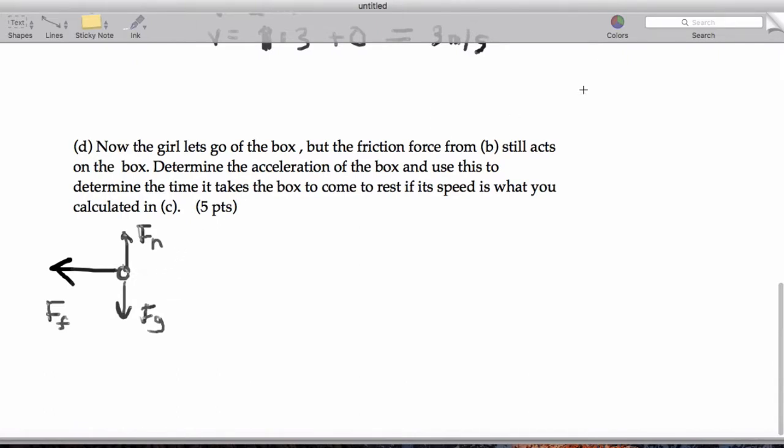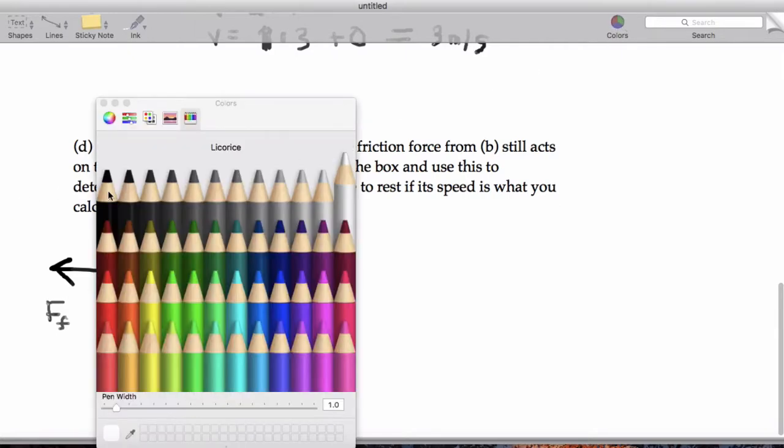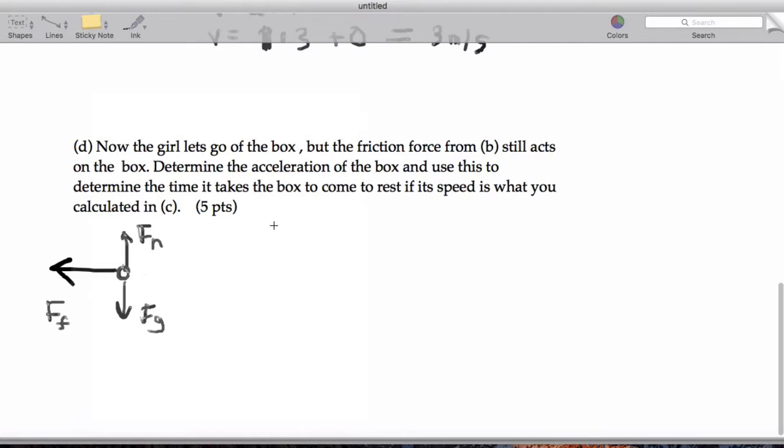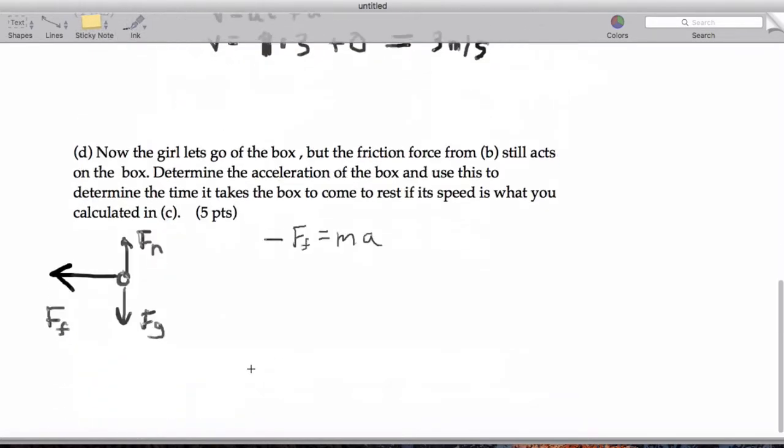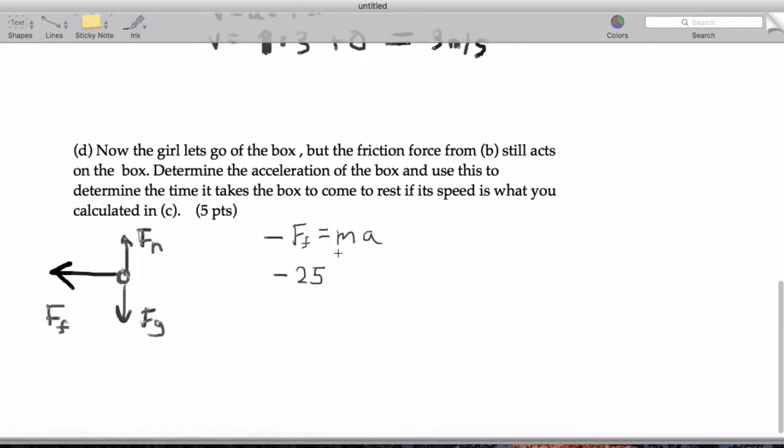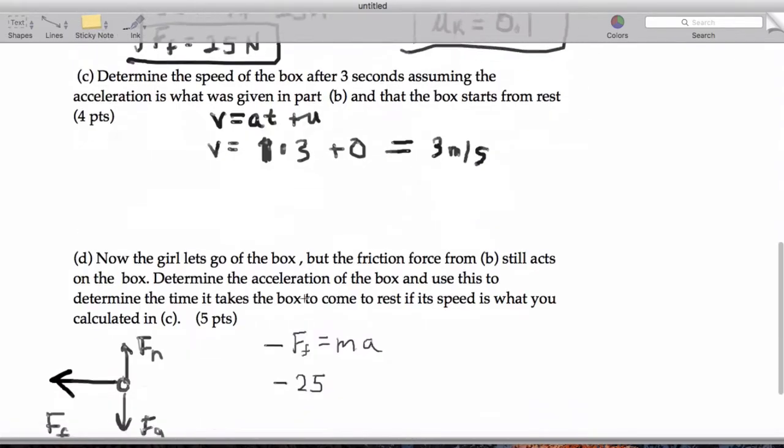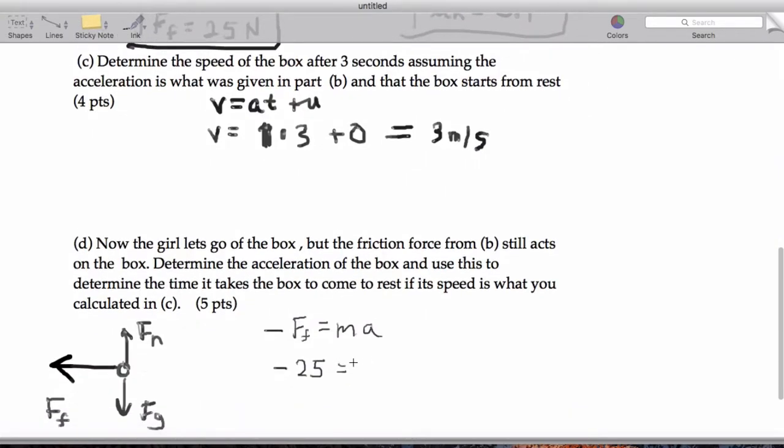Perfect. All right. Now, continuing to keep this in mind, let's go ahead. So, remember, friction force always fights what we are doing. And the effect of this friction force is M times A. Now, the friction force that we got was 25 newtons. So, we have negative 25 from part B equals M, which is 25, times A, which is the acceleration. So, A is going to be negative 1 meters per second squared.